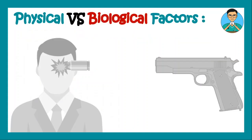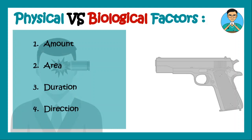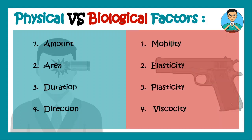Several factors, some physical and some biological, influence the degree and extent of injury. The physical factors include the amount of force involved, the area over which the force was given, the duration of force, and the direction of force. The biological factors involve the mobility, elasticity, plasticity, and viscosity of the tissue undergoing injury.